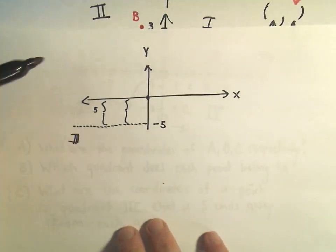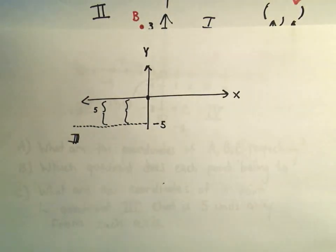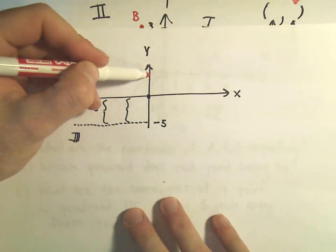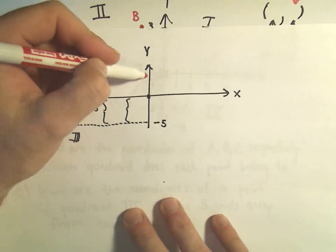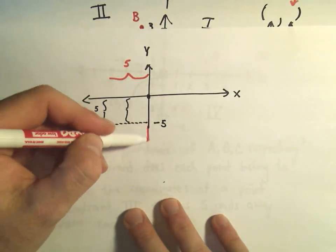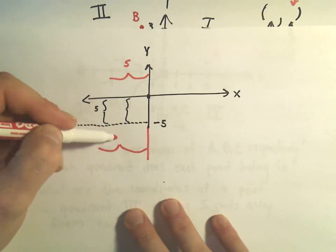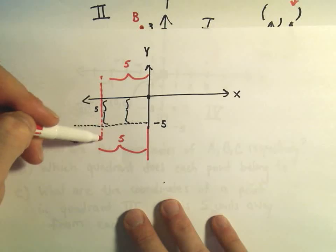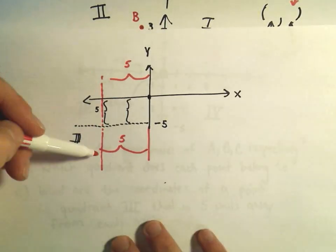Likewise, if you think about it, to be in quadrant 3, there's a lot of ways we could be 5 units away from the y axis. We could just go 5 units to the left. But again, we need to be in quadrant 3. So to be 5 units to the left, I would have to be somewhere along this vertical line.